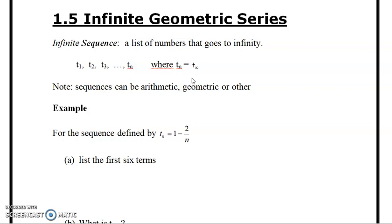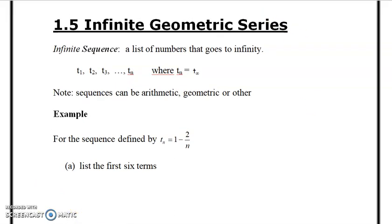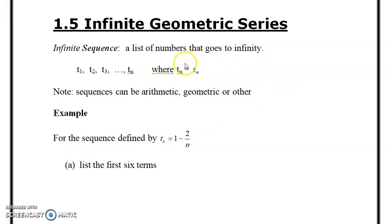So now we're on 1.5, infinite geometric series. What is an infinite sequence? It's a list of numbers that goes to infinity, so it's t1, t2, t3, and so on. That is going to infinity.